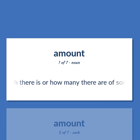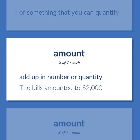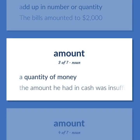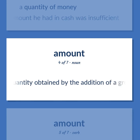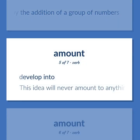Amount: How much there is or how many there are of something that you can quantify. To add up in number or quantity. Example: The bills amounted to $2,000. A quantity of money — the amount he had in cash was insufficient. A quantity obtained by the addition of a group of numbers. To develop into — this idea will never amount to anything.